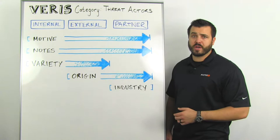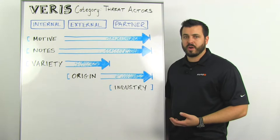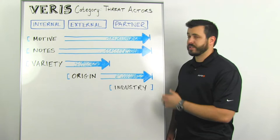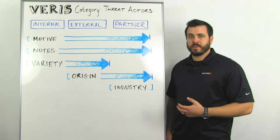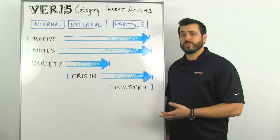So threat actors is what we're talking about this week. The cornerstone of VERIS is what they call A4 — it's four A's. There's actors, there's actions, there's assets, and their attributes. We're focused on actors this week. So let's talk about what a threat actor is. A threat actor is an entity that causes or contributes to an incident or an event.